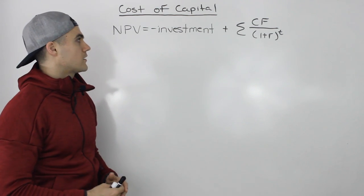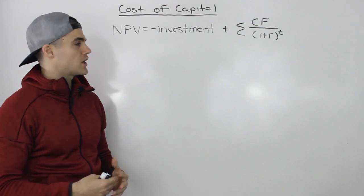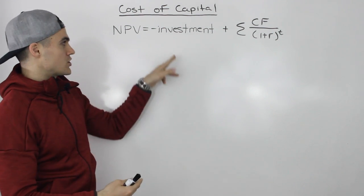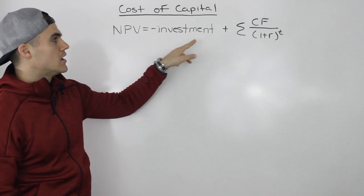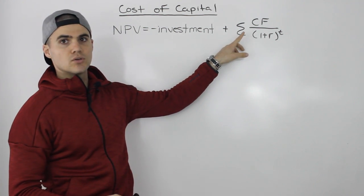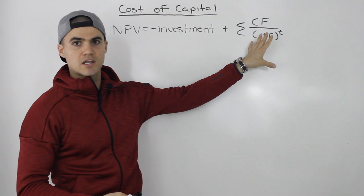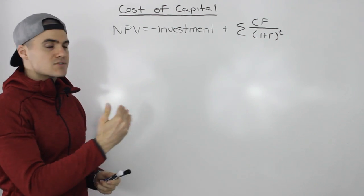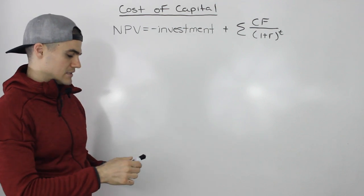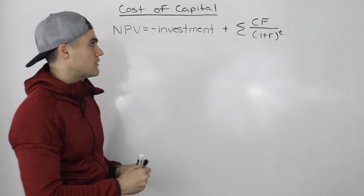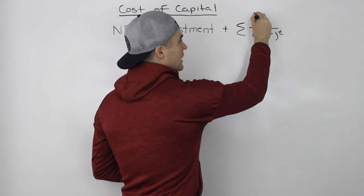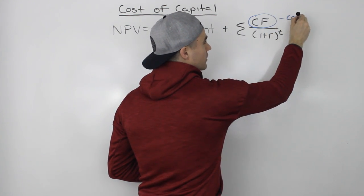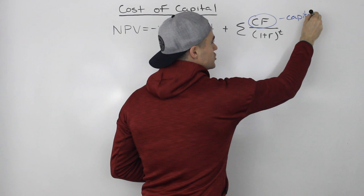If you remember way back when, we said the NPV of a project is equal to the investment in the project as a negative cash flow, plus the present value of all of the cash flows in the future that the project is generating. And as we went on, we broke this formula down into a little bit more detail when we talked about capital budgeting.